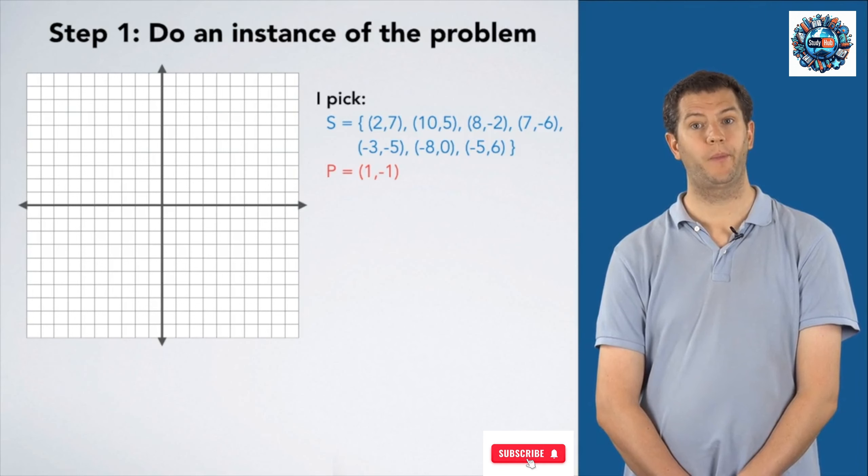We're going to find the point in s that is closest to p. The first thing I'm going to do is to draw my points on my Cartesian plane.